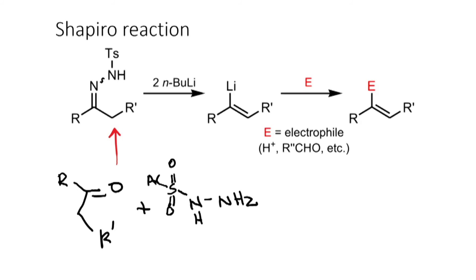The next name reaction we are going to look at is the Shapiro reaction. This is an interesting reaction because it involves the formation of a hydrazone. In chemistry practicals, we have looked at functional group analysis and found that aldehydes or ketones can react with 2,4-dinitrophenylhydrazine to give a hydrazone. The formation of this hydrazone is not a new reaction. The next step is reaction with butyllithium — here is where the mechanism gets interesting. You find that this C=N is gone and you generate an organolithium derivative, which can then react with an electrophile such as a proton source to give an olefin, or an aldehyde to give a product.